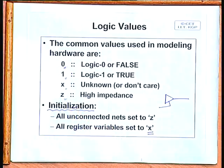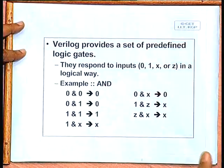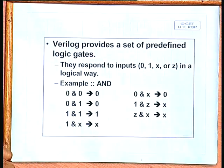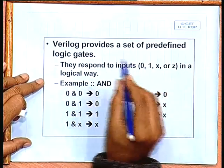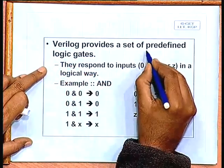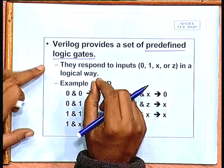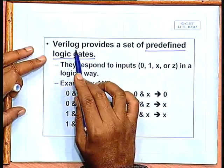Corresponding to these four logic values, Verilog provides a set of predefined logic gates — AND, OR, NOT, XOR, etc. These predefined logic gates are a basic primitive of the language itself; they are not something you add as a feature, unlike VHDL. VHDL does not have any predefined logic gate by default, but Verilog has.